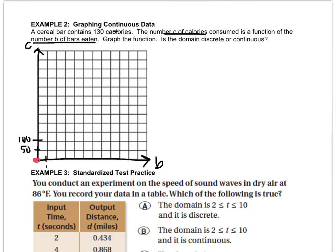If I have one bar, then I have 130 calories, so that's around here. If I have two bars, that's 260, so that's right there. If I have three bars, that's 390. Four bars is 520. Alright, so that'll be good.